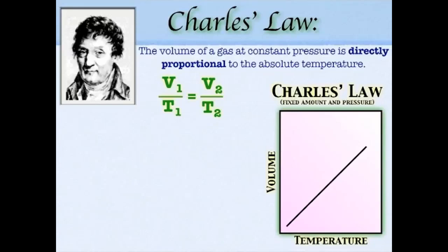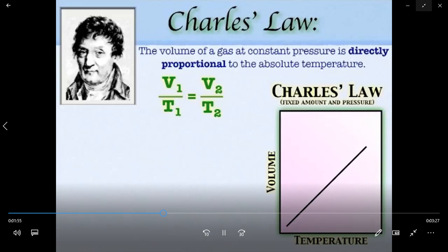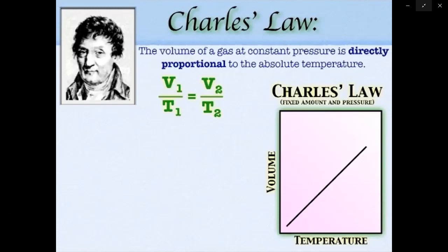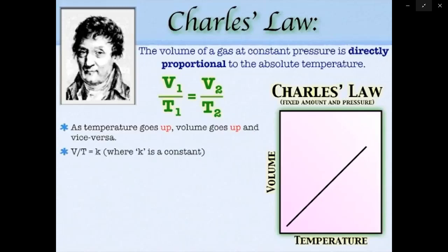Remember that all gas laws are based on the principle that all other things are equal. For Charles' Law, the amount is not changing and the pressure is not changing. For Boyle's Law, the temperature and amount are not changing. If you start changing more than one variable, you have a different law. As the temperature goes up, the volume goes up, and vice versa — as the temperature goes down, the volume goes down.